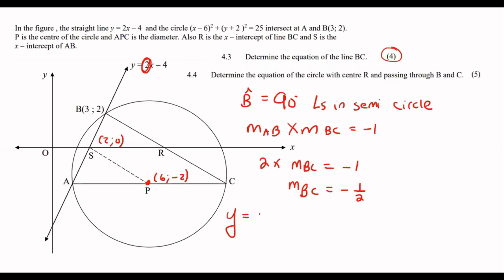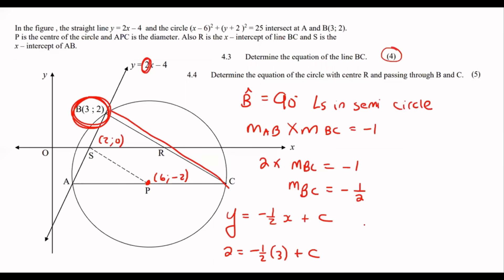The equation of BC is y = -½x + c. To find c, plug in a point on that line — which would be B. So 2 = -½ × 3 + c, and solving for c gives c = 7/2. Therefore the equation of BC is y = -½x + 7/2.